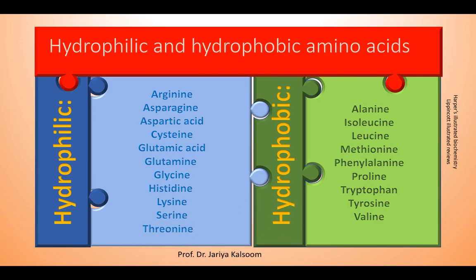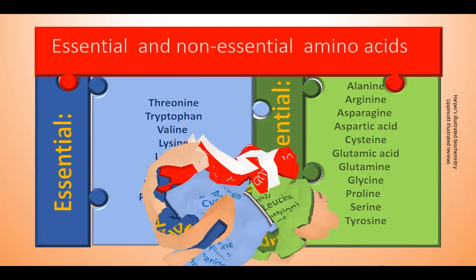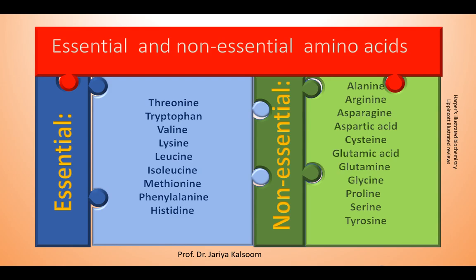Amino acids may also be classified as hydrophilic and hydrophobic based on the properties of their side chains. The side chains of hydrophobic amino acids tend to cluster in the interior of the protein in a cohesive environment. However, for proteins present in a hydrophobic environment like the cell membrane, the R groups are found on the outer surface. Non-essential amino acids can be synthesized in the body in sufficient amounts from metabolic intermediates, whereas essential amino acids cannot be synthesized in sufficient amounts by humans and must be supplied in the diet.